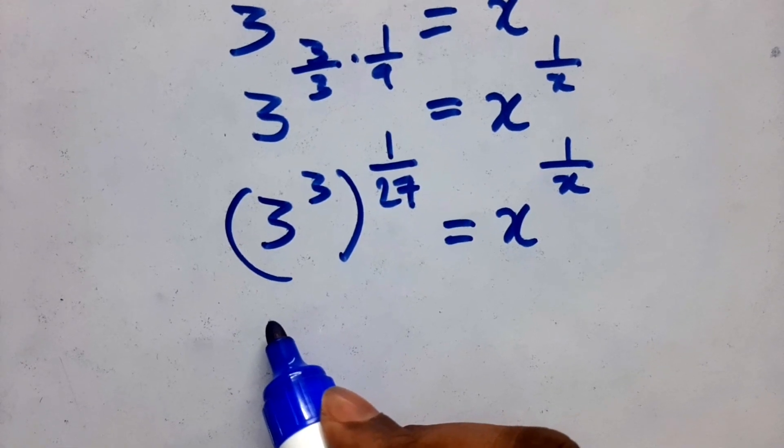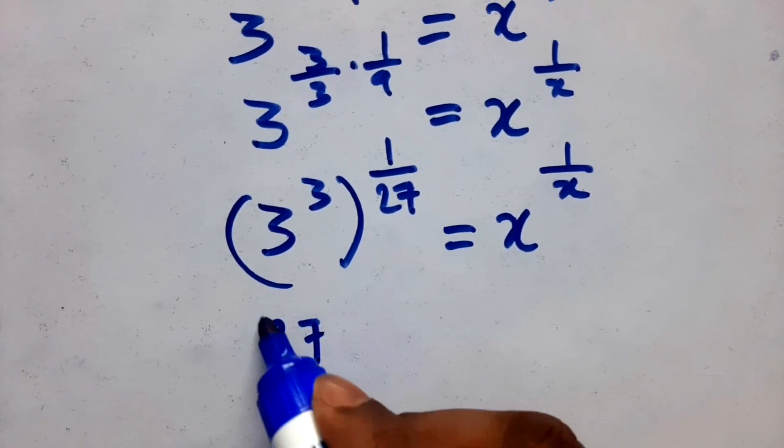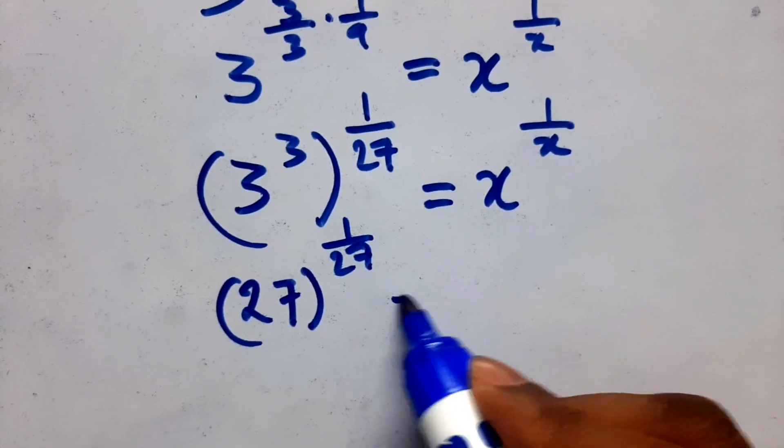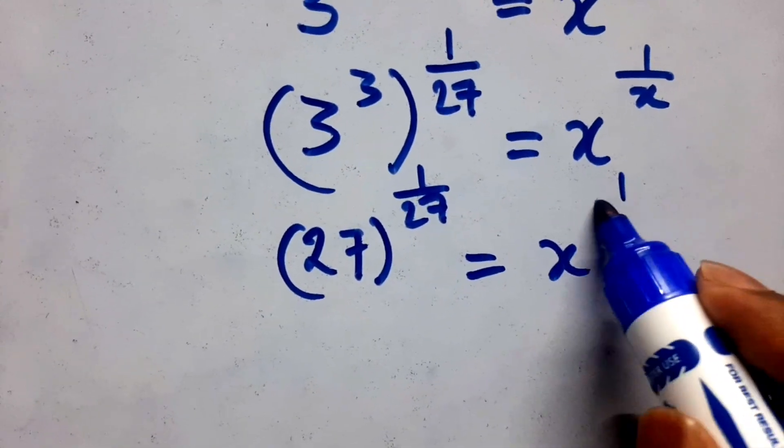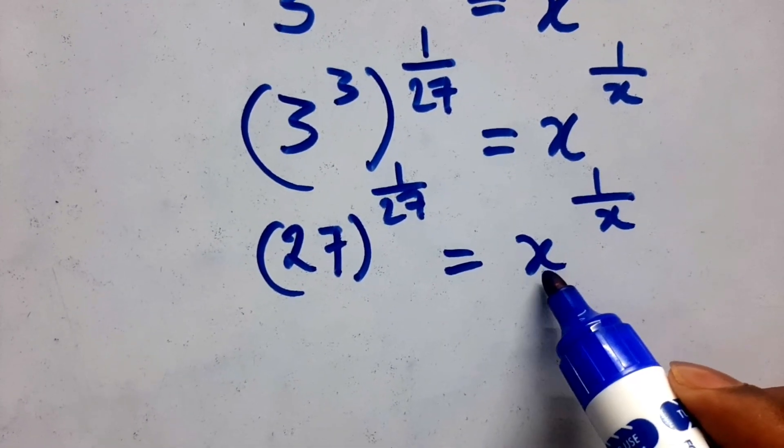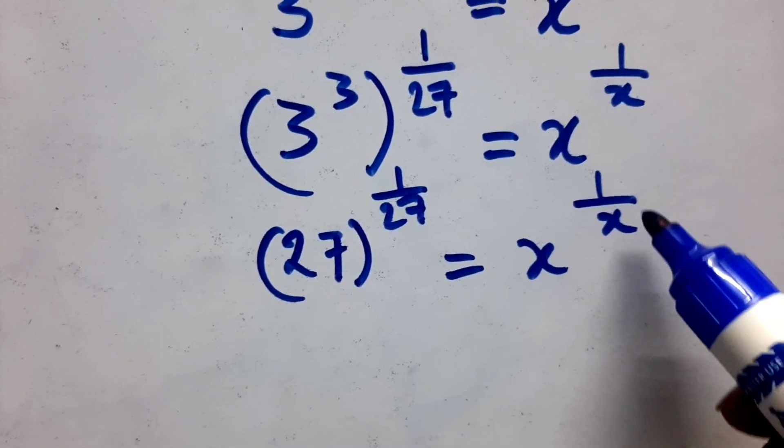27 to the power 1 by 9 is equal to x to the power 1 by x. Here we have to observe, here base x and the power denominator is same, here also same.